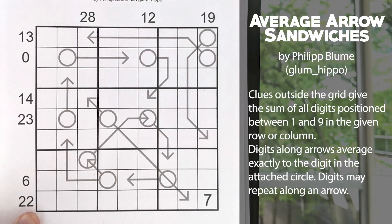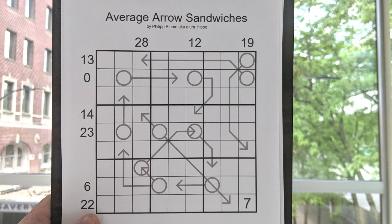I won't really be able to film myself while I'm solving, but I'll take some pictures and include my commentary as I'm going through. We've got normal Sudoku rules, there's Sandwich Sudoku — the numbers on the outside of the grid give you the sum of the digits between the 1 and the 9, like usual. The arrows are a different kind: the circle is actually the average of all the digits on the arrow.